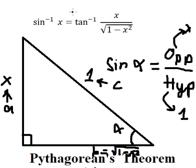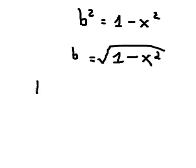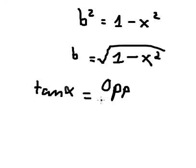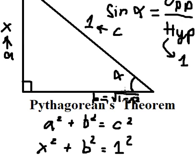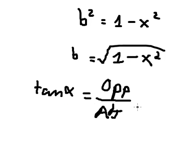Now let's go to tan. We know that tan alpha is opposite divided by adjacent. So opposite is x and adjacent is the square root of one minus x squared. Therefore tan alpha equals x over the square root of one minus x squared.